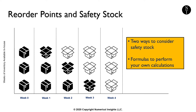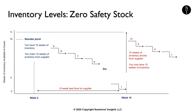To get started, let's look at what happens to inventory levels of just one item. This will help us understand the terms reorder point and safety stock. I'll start with the scenario where we run inventory levels down to zero before new inventory arrives from our supplier — this means we have zero safety stock.